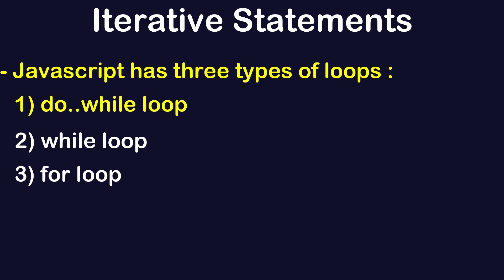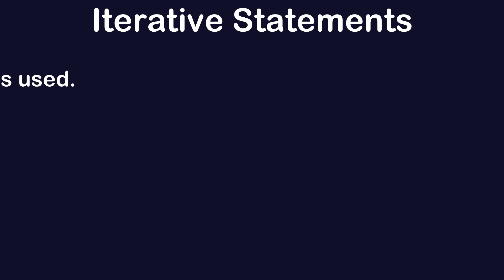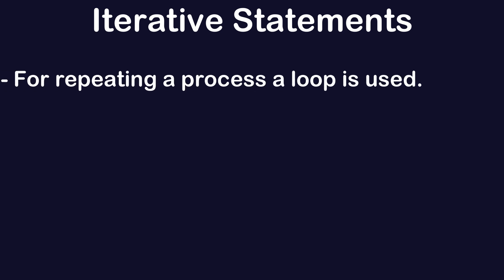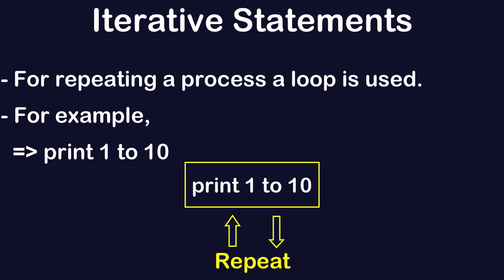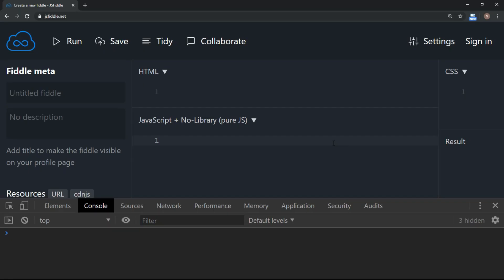When you want to repeat a process, you use a loop. For example, if you want to print 1 to 10, that means you have to repeat a process. When there is a need of repeating a process, you always consider an iterative statement. For example, we take a variable which begins with 1.